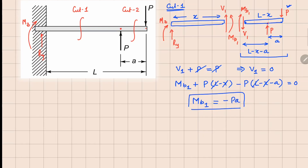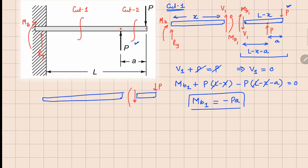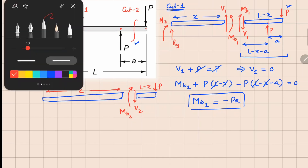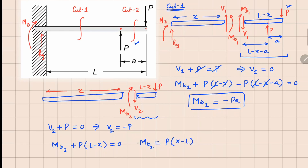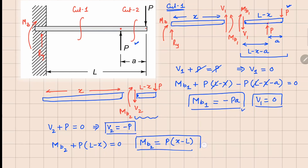Now for cut two, the cut is going to be somewhere here. I'll draw only forces on the right part because that's easier — only one force is there. This is the negative phase, so we have V2 and M_b2 here, and the distance from here to the cut is x, which becomes L minus x. The force balance gives V2 plus P equals zero, so V2 equals minus P. Taking moment about this point gives M_b2 plus P times (L minus x) equals zero, so M_b2 equals P times (x minus L).